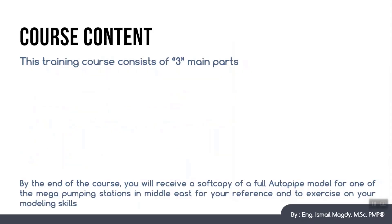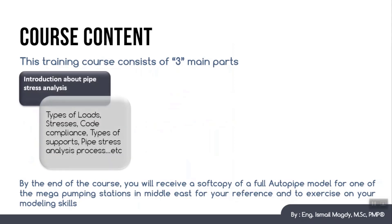This course shall consist of three sections. In the first section, you will start with pipe stress analysis basics. We will explain why and when we have to do pipe stress analysis, then we will explain the loads affecting any piping system and their classification. We will talk about the ASME code and how to check if our system is code compliant. We will also learn about different types of supports in any piping system.